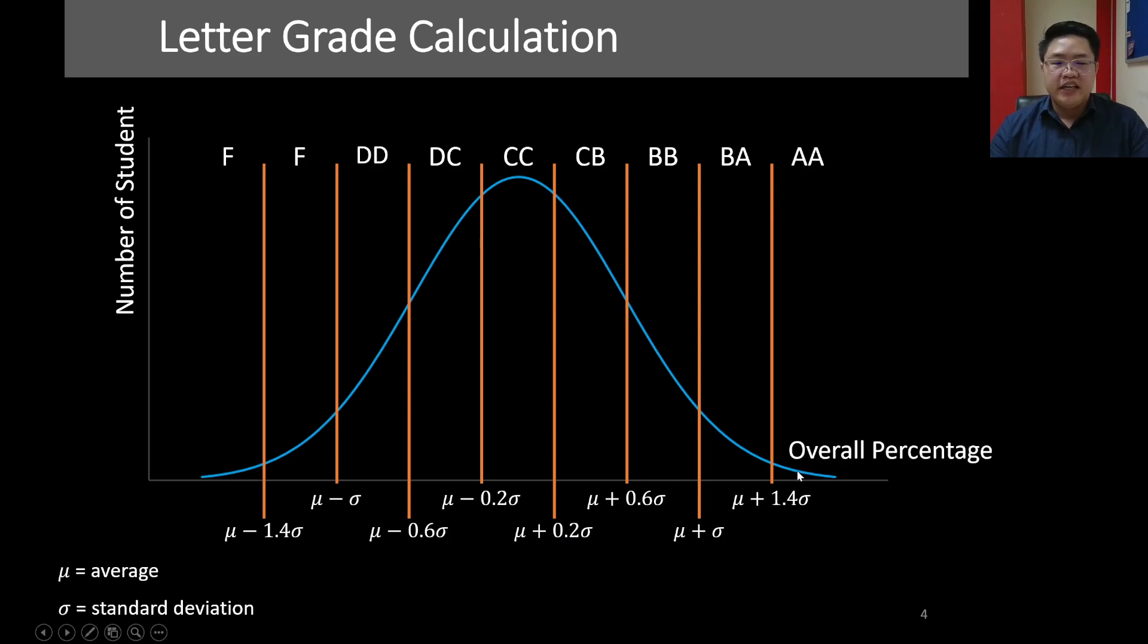In other words, if a student receives the overall percentage higher than this point, which is average plus 1.4 times standard deviation, the student will be awarded letter grade AA. Or if a student whose percentage is within these two points, within average minus 0.6 standard deviation and average minus 0.2 standard deviation within this region, the system will suggest letter grade DC.